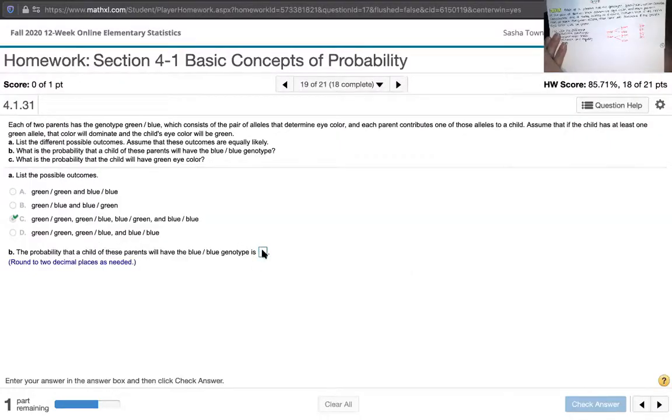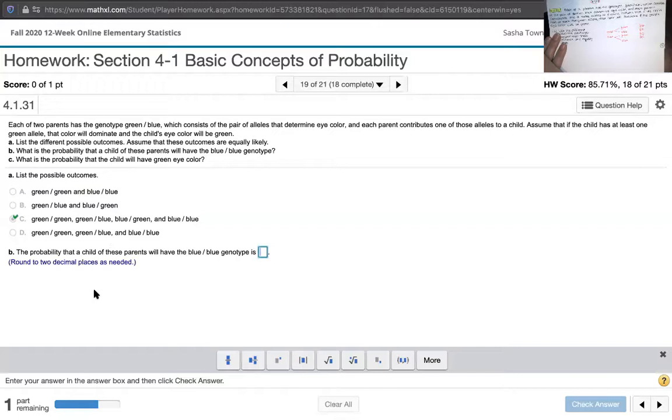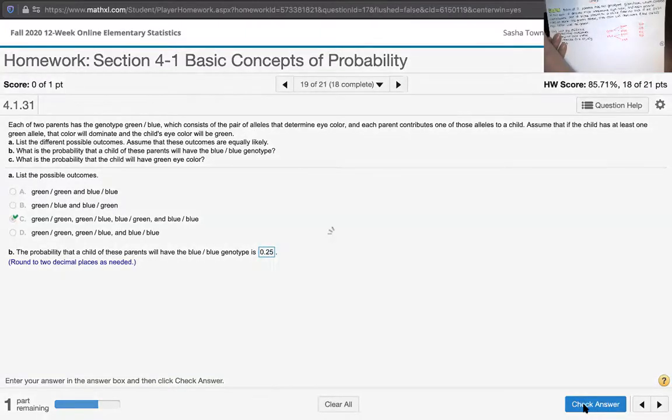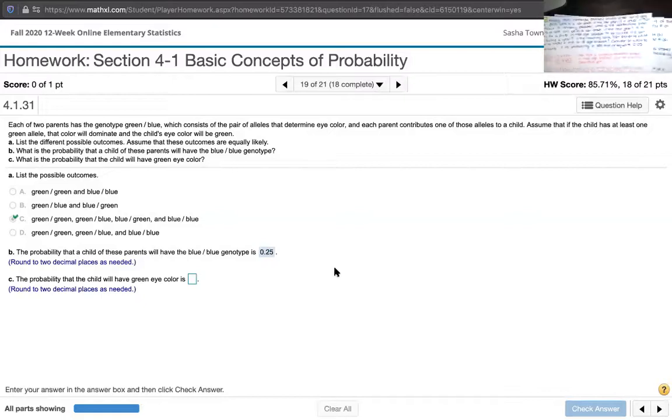So it says round to two decimal places as needed. One out of four, we know that's 25% or 0.25. Okay. So there's that.